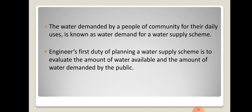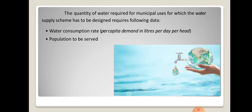When an engineer plans or designs a water supply scheme, it is very important to evaluate both the amount of water available and the amount of water demanded by the public. They have to analyze the total water available as well as the total water demanded by the community. The quantity of water required for municipal uses — domestic, industrial, or various other uses — requires two key data points: water consumption and the population to be served.